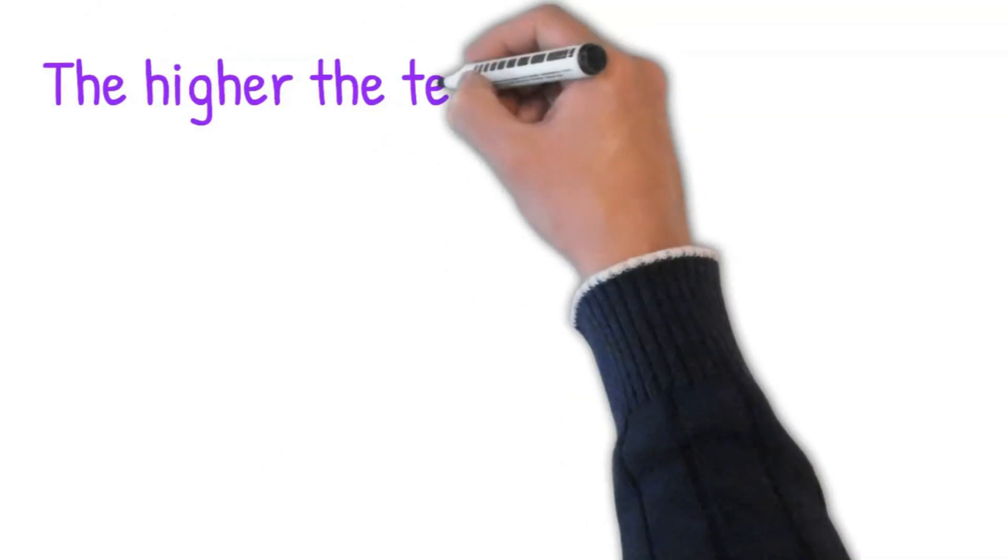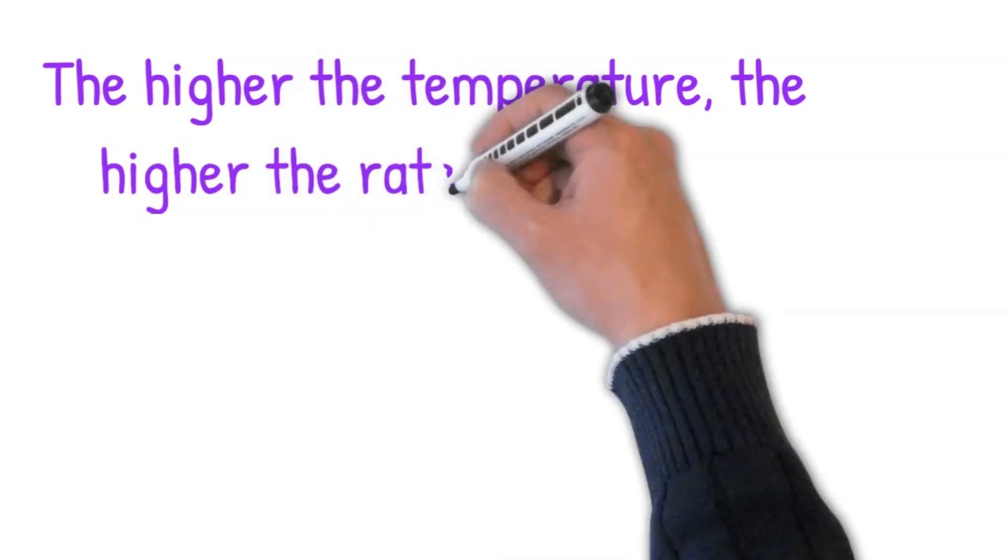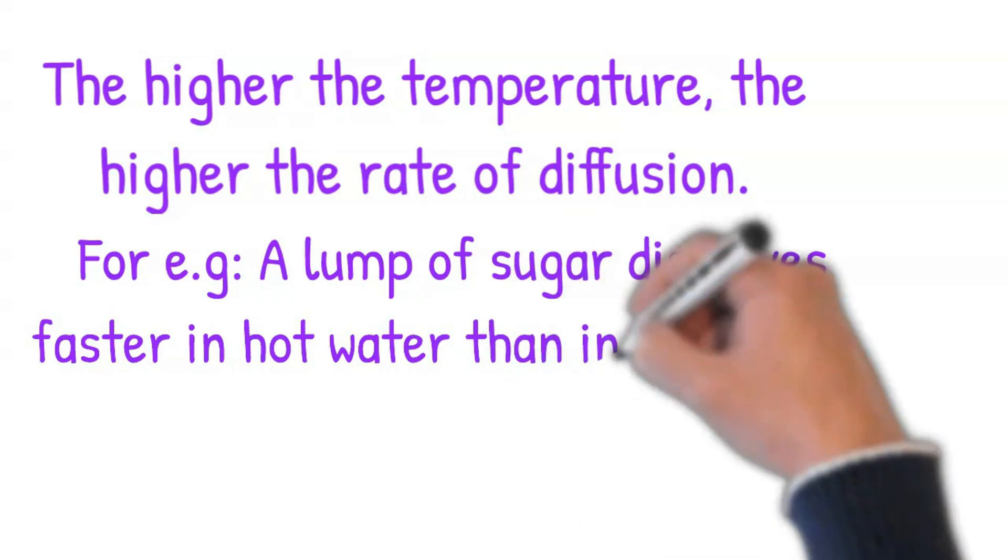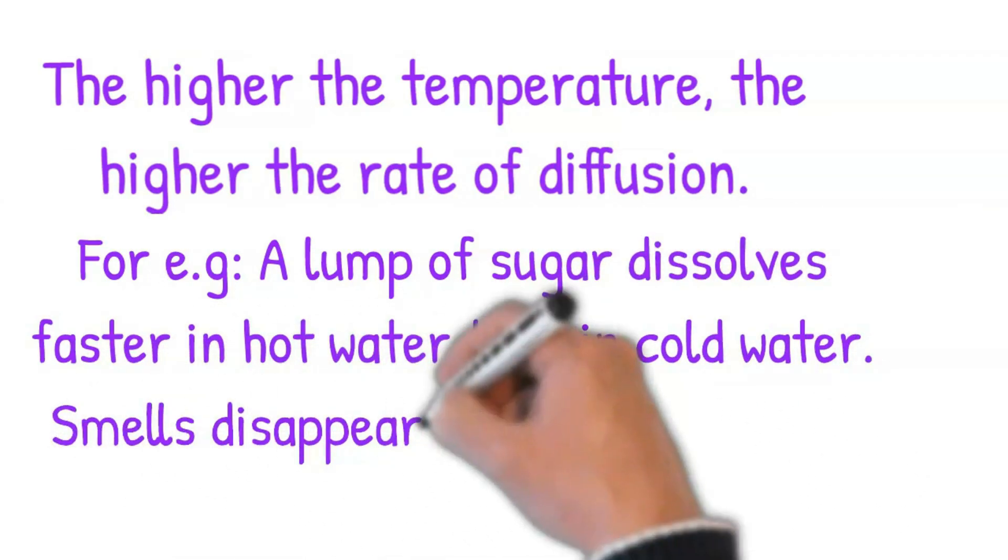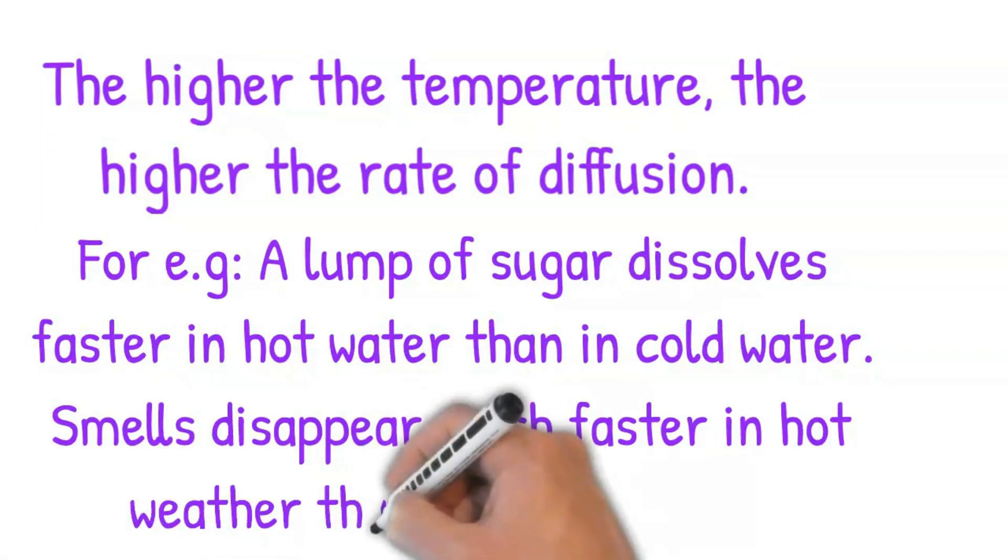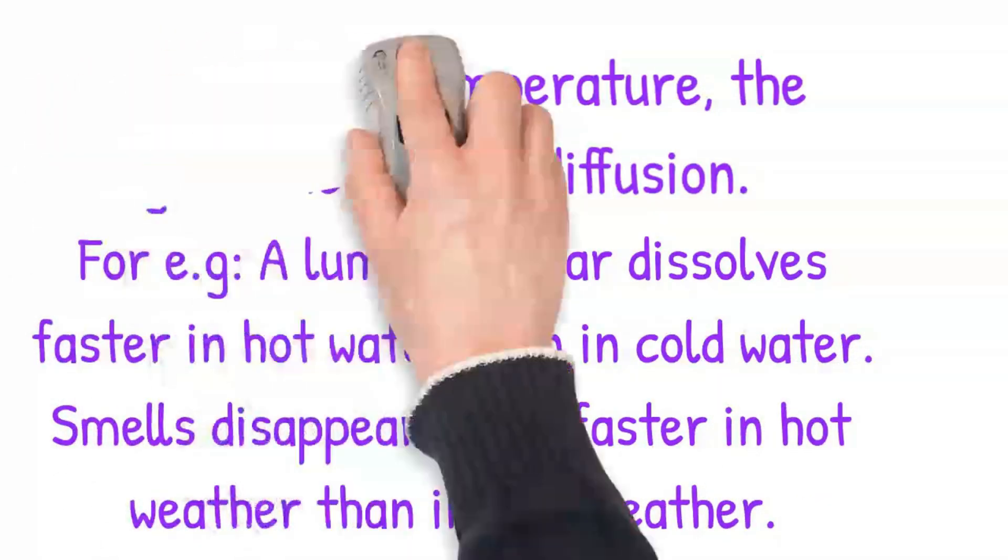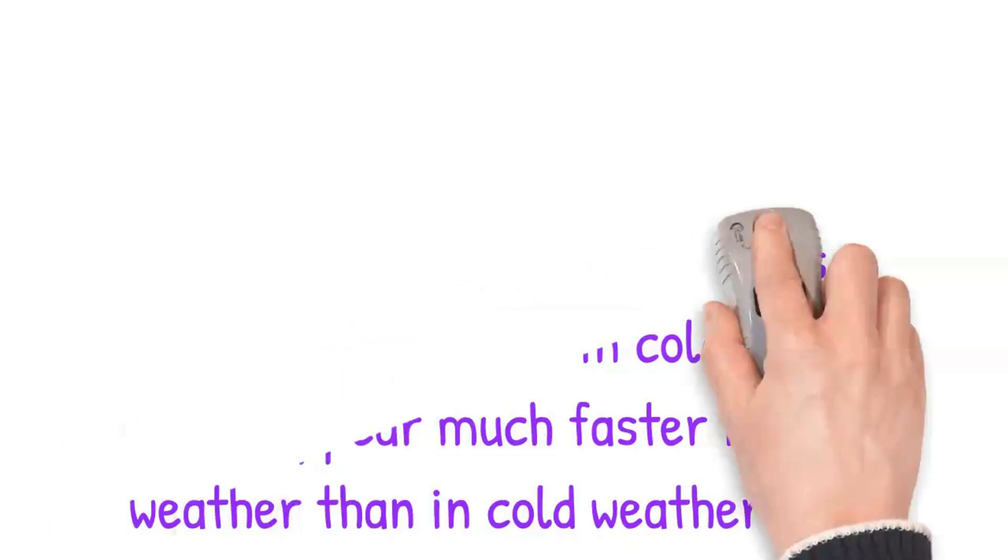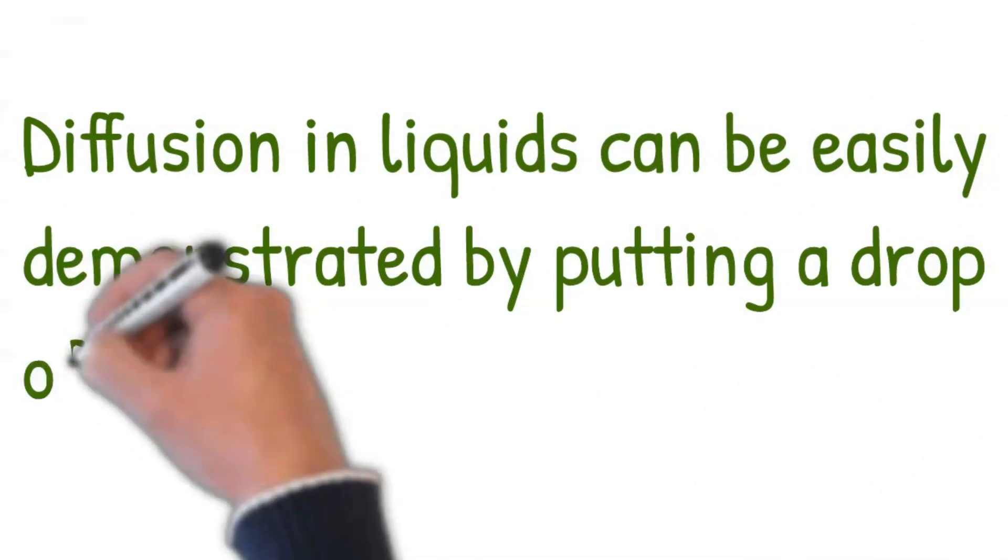The higher the temperature, the higher the rate of diffusion. For example, a lump of sugar dissolves faster in hot water than in cold water. Smells disappear much faster in hot weather than in cold weather. Diffusion in liquids can be easily demonstrated by putting a drop of ink in water.